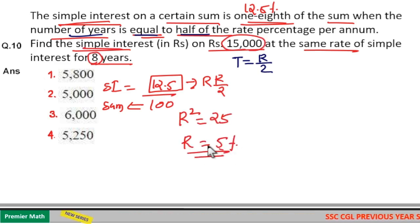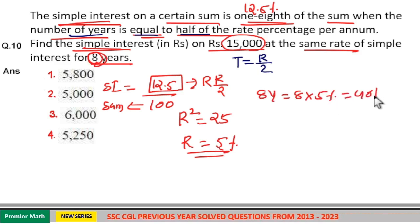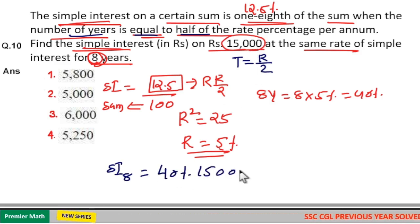R is equal to 5 percentage means for 1 year, 5 percentage is the rate. Then for 8 years, 8 into 5, 40 percentage is the rate. So simple interest for 8 years is equal to 40 percentage of the sum, 15,000. Now percentage and double zero cancel, 15 into 4 is equal to 60. 6,000 is the interest generated for 8 years.